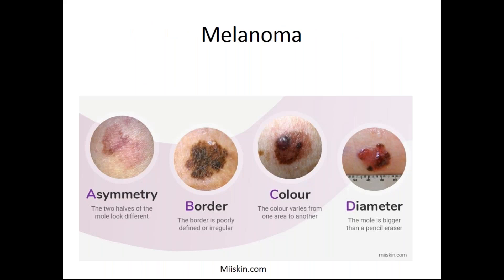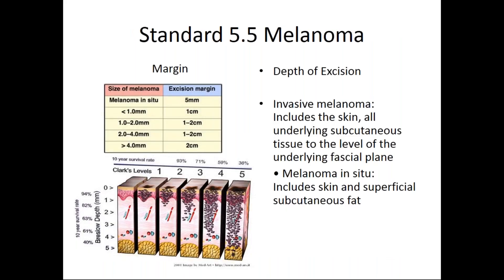The next standard regards melanoma. Standard 5.5 discusses the depth of excision. If a patient has invasive melanoma, the excision should include the skin and underlying subcutaneous tissue down to the level of the underlying fascial plane. If it's melanoma in situ, it should include the skin and superficial subcutaneous fat. This should be documented in the operative summary. You can also see the recommended excision margins for the different depths of melanoma.